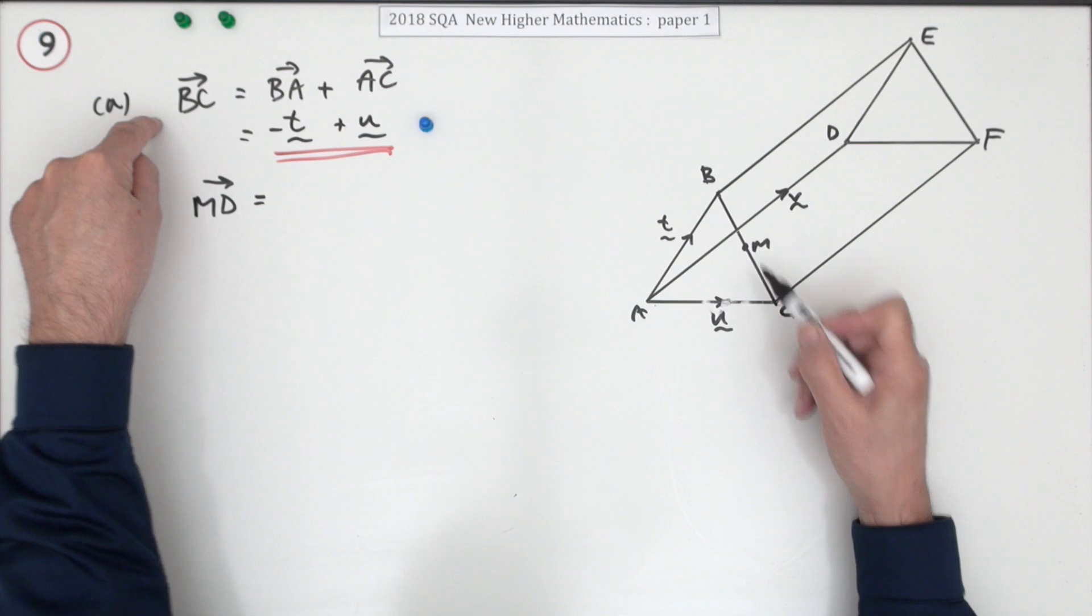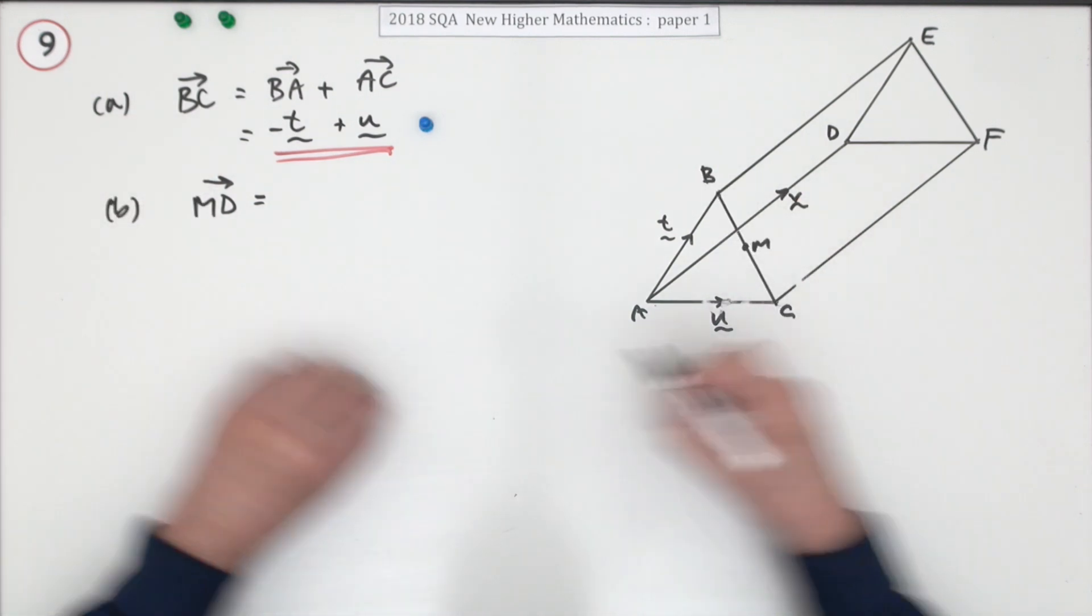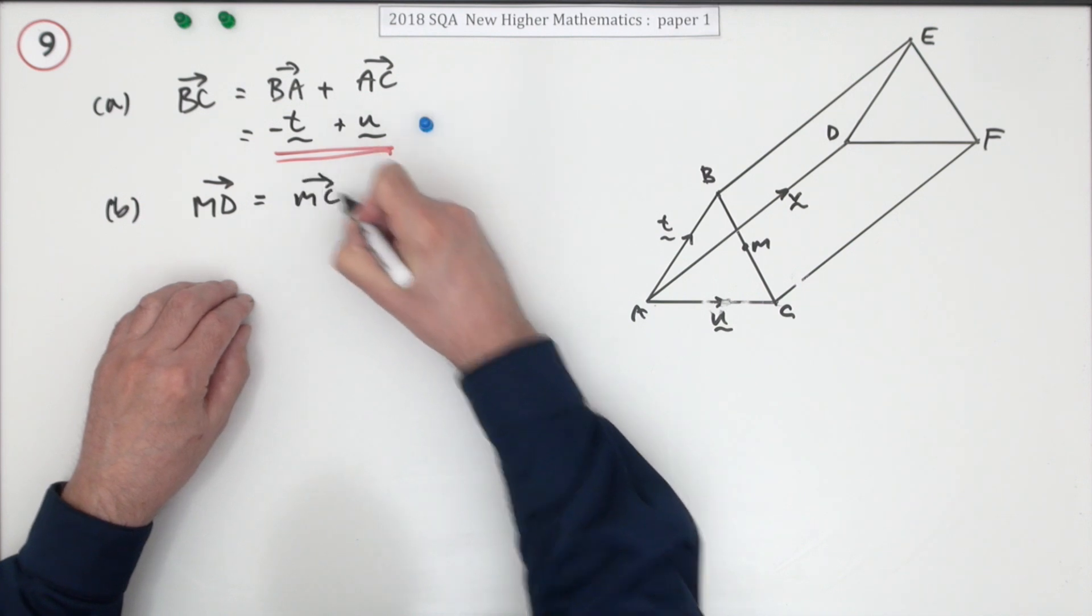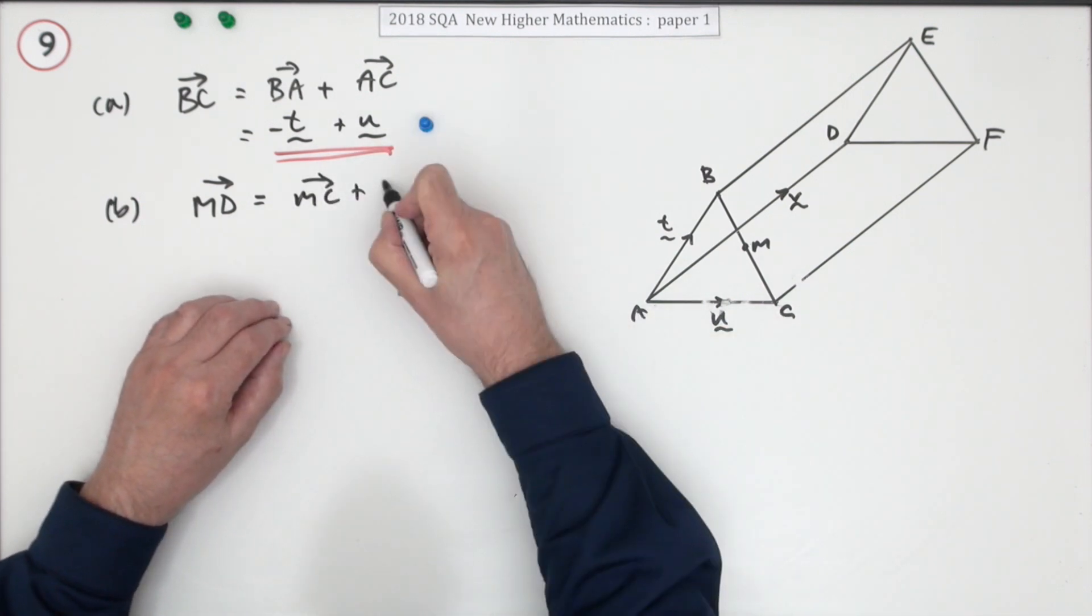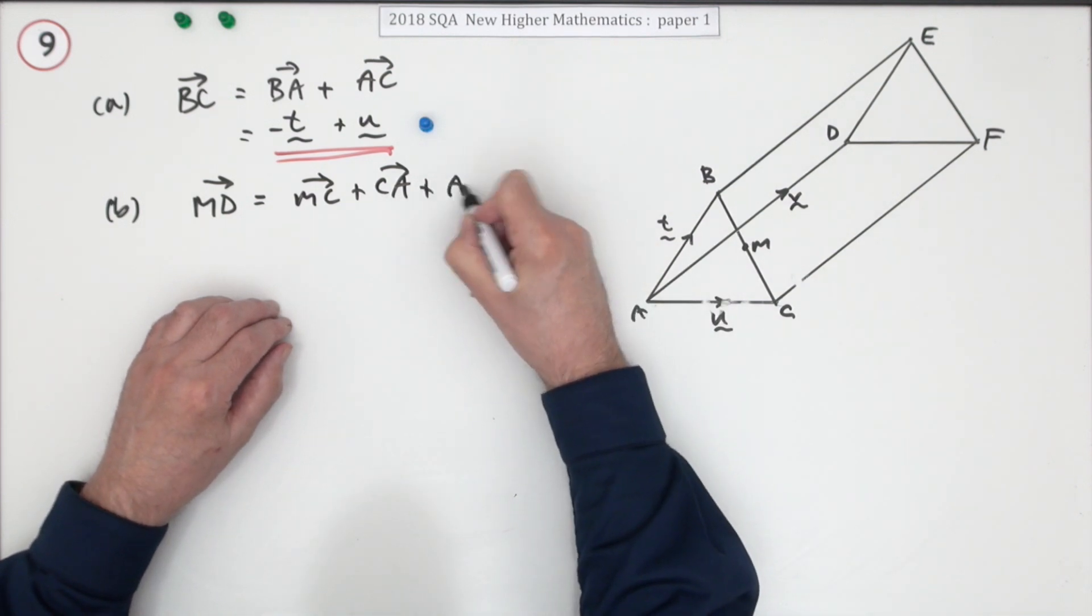Or since in the first part, you know BC, you could head off that way then. So that's the path I'll follow. I'll go from M to C. Then C to A. Then finally A to D and you'll arrive at your destination.